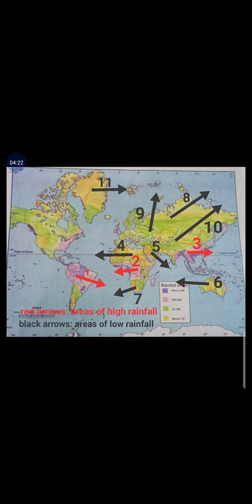Number six shows us central and western Australia. Number seven shows us the Kalahari Desert, which is also in Africa. Number eight is showing us the central and northern Eurasia — the combined area of Europe and Asia. Number nine is showing us the western part of Europe. Number ten is showing us almost central Asia. And number eleven shows us the polar regions near the North Pole, which always receive very less rainfall.